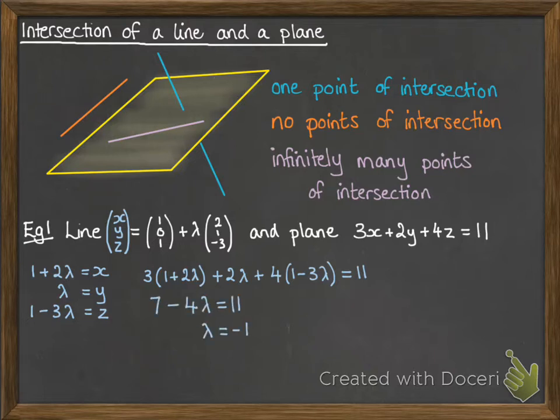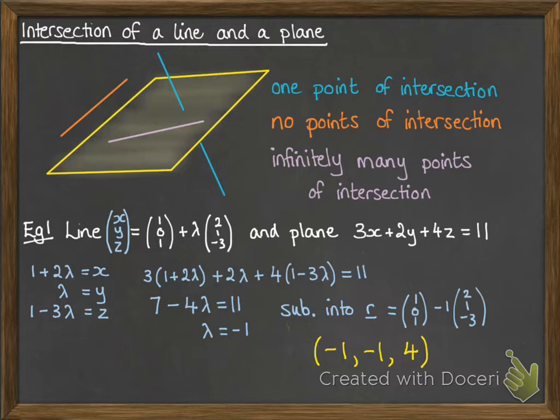So continuing with solving that equation, we get lambda to be minus 1. Once we've got that, we can substitute it into our equation for the line, and then it gives us the coordinates of the point where the line intersects with the plane.